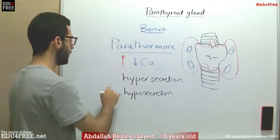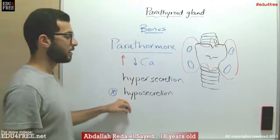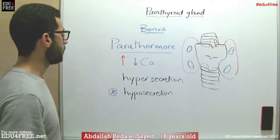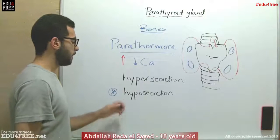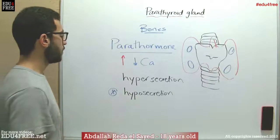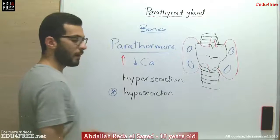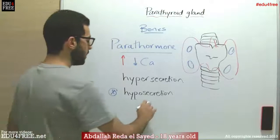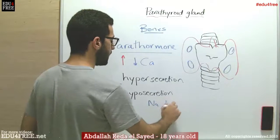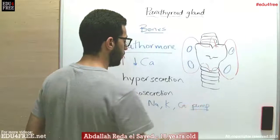On the other hand, in hyposecretion, the levels of calcium in blood will be low due to the insufficient secretion of parathormone. And there will be muscle convulsions and spasms. Also, there will be an increased excitability in the nervous system due to the disorder in the sodium-potassium-calcium pump in the nerve cells or in the neurons.